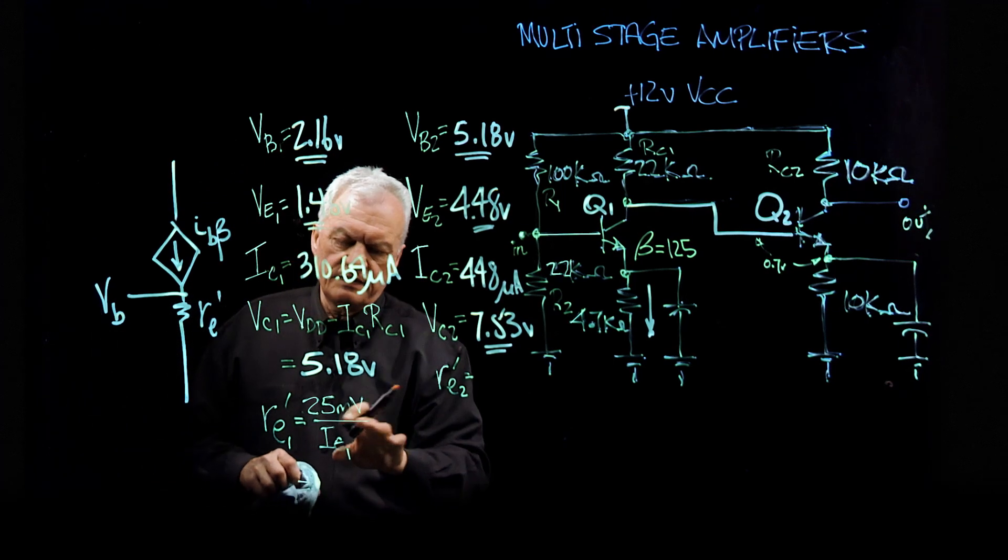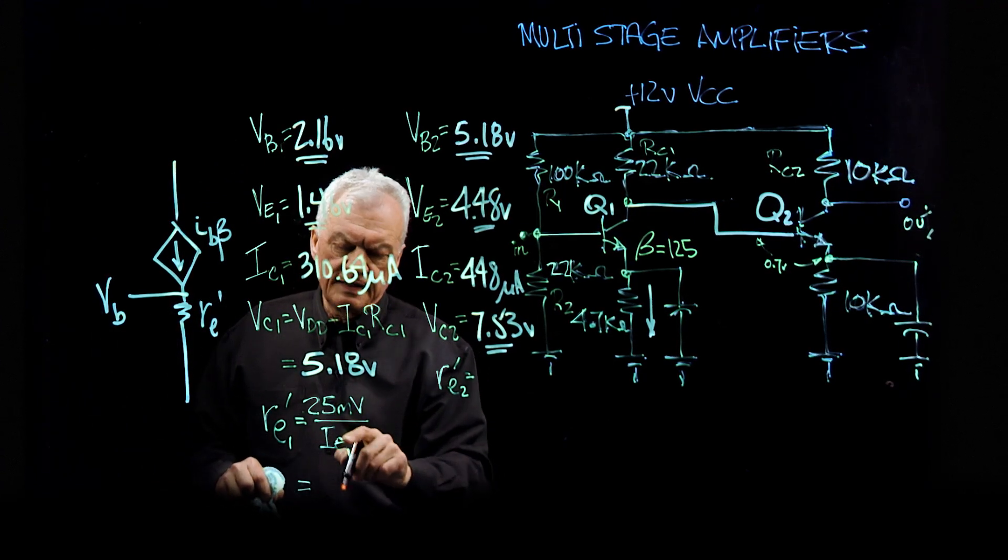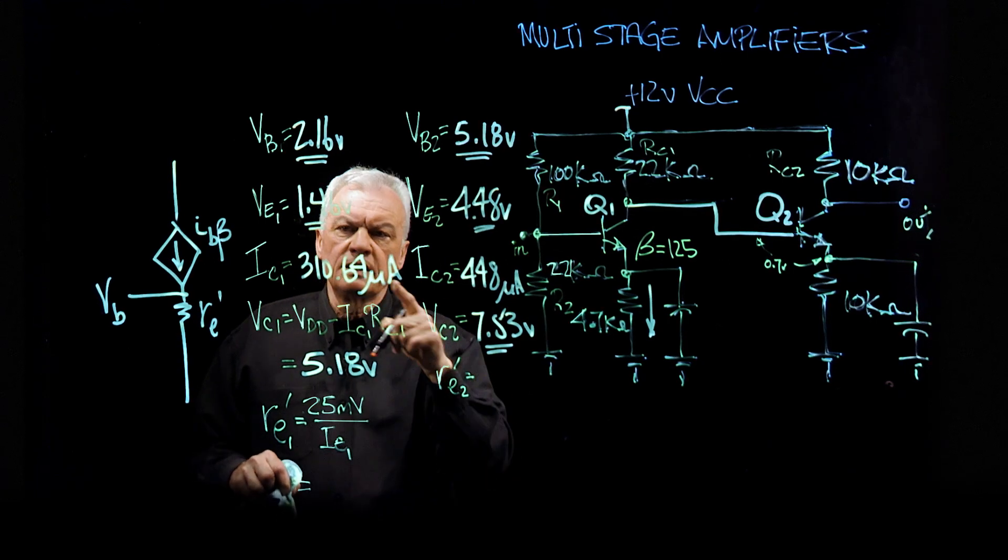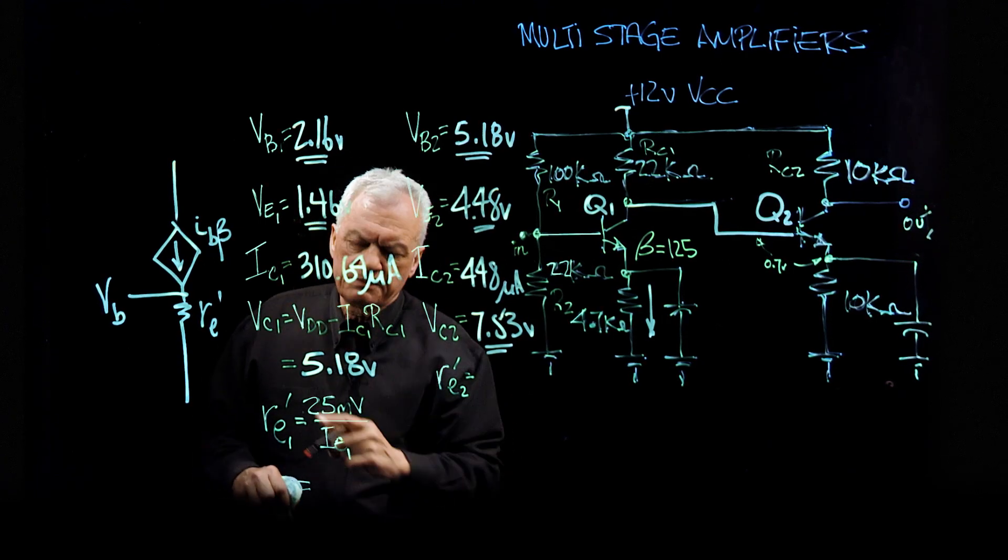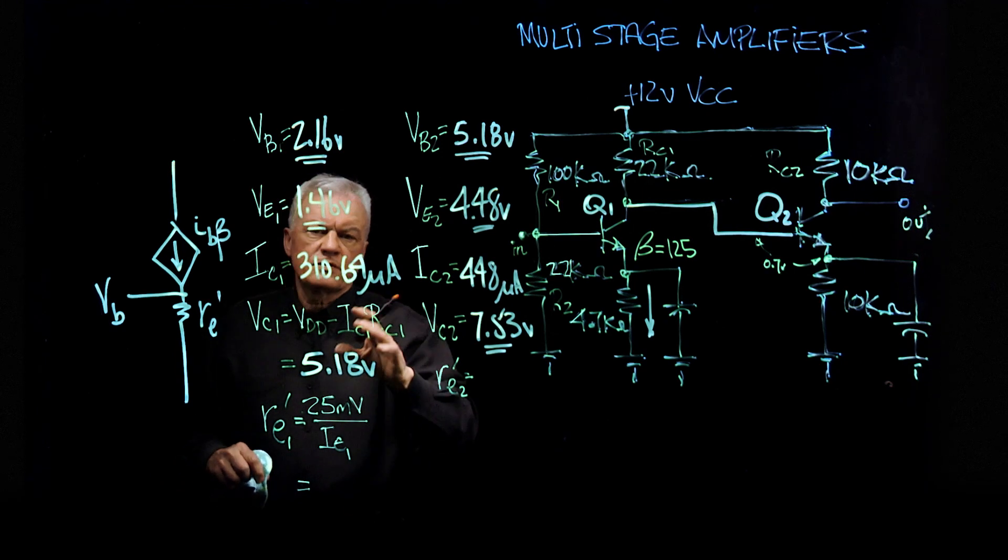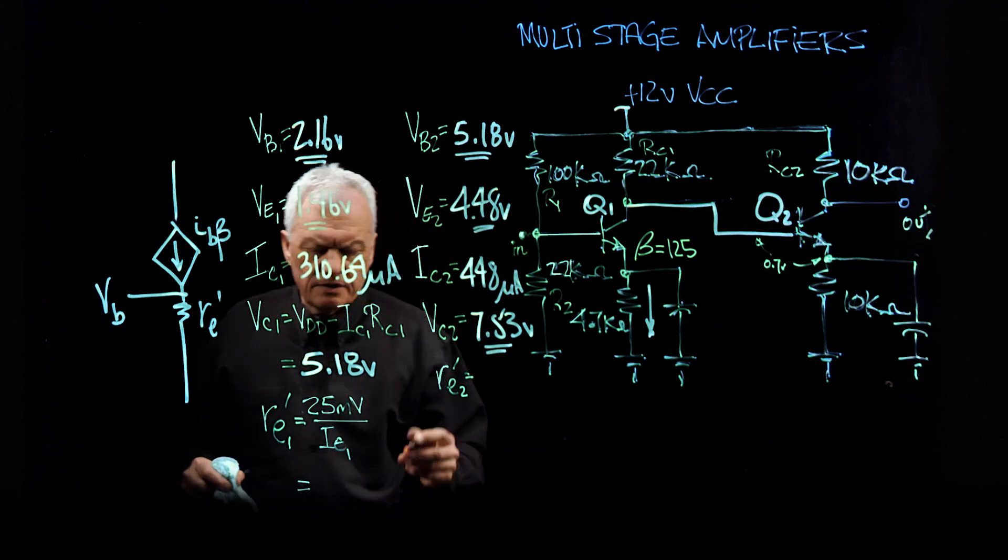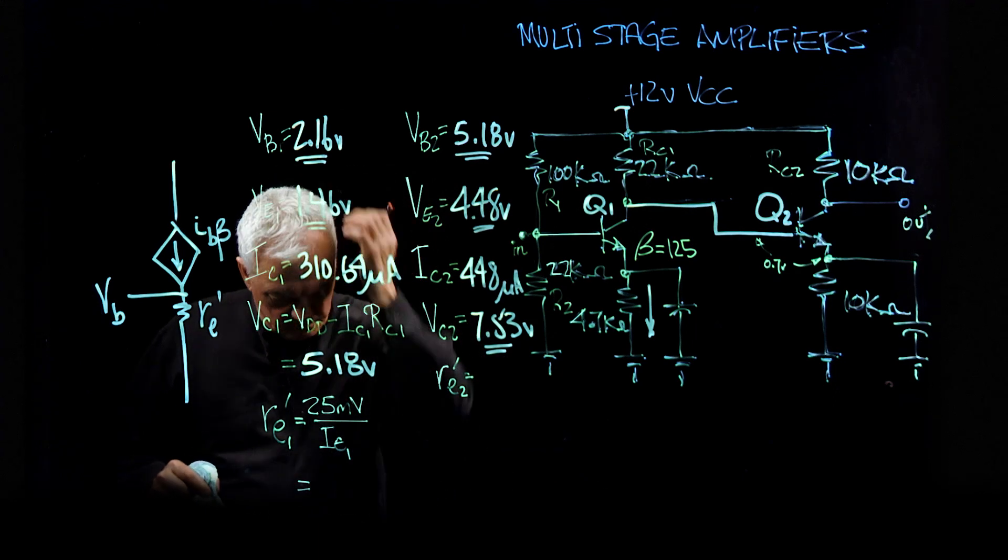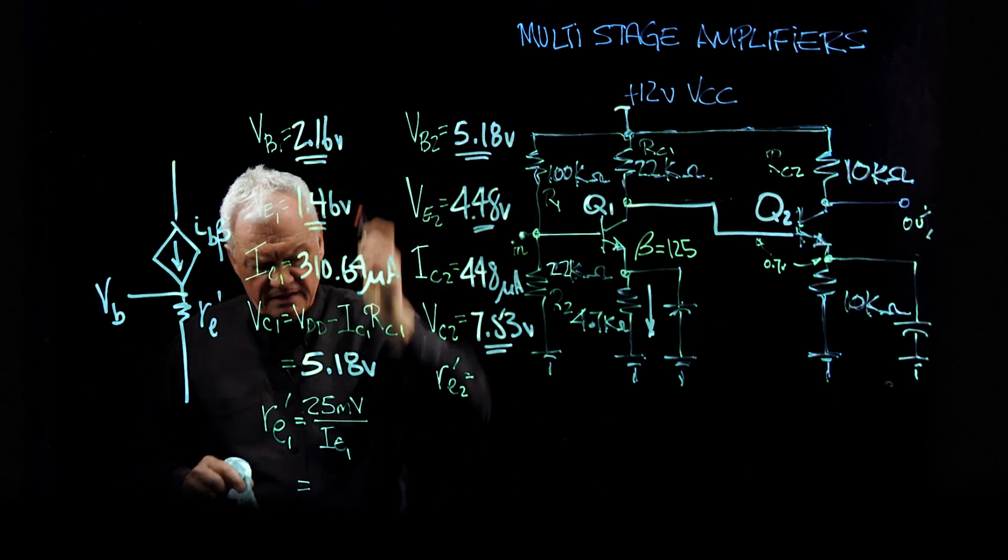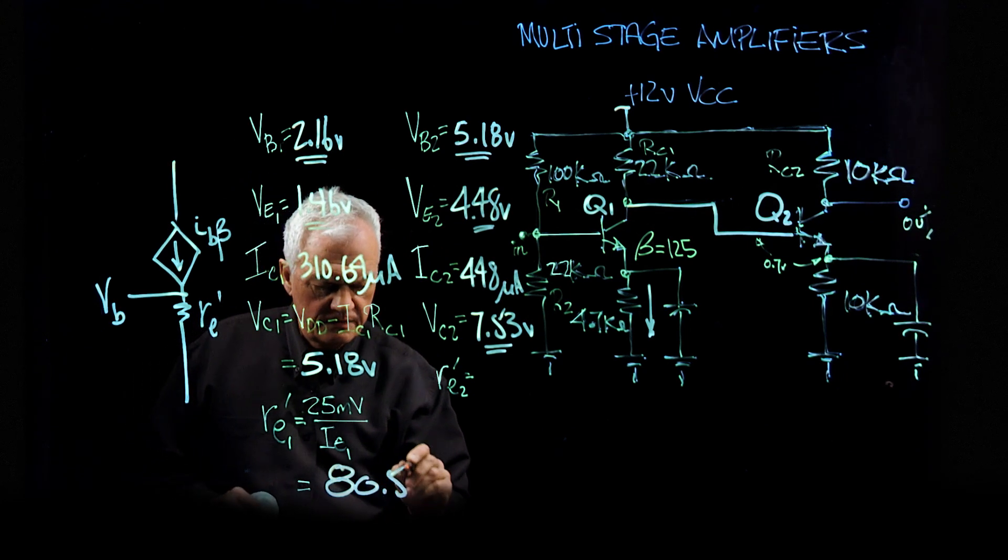The formula we have and it's temperature dependent, that's where we get the 25 millivolts from, is 25 millivolts over the DC current, which happens to be equal to, in this case here, the collector current. So that would be 25 over 310.64 microamps. And so doing the math is 80.5 ohms.